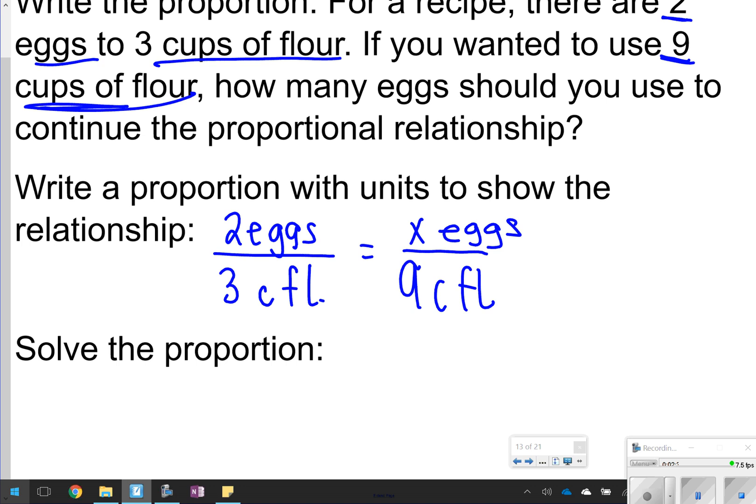We do know that proportions are equivalent fractions, and I see that three has just been tripled to get to nine. So that means two is probably going to be tripled to get to X. So that means I'm probably going to be using six eggs. We'll talk about another way to solve proportions tomorrow in the next video, but for right now, just make sure you know how to solve or how to write them.